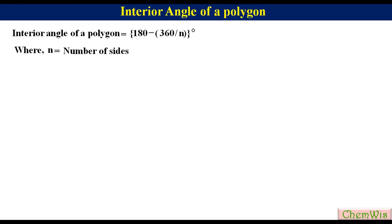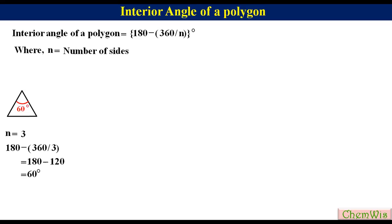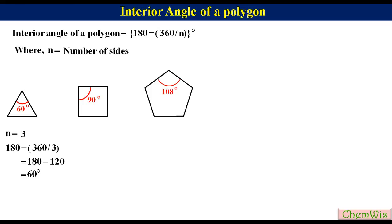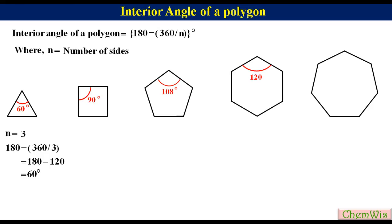For example, in an equilateral triangle, n is equal to 3. So the interior bond angle will be equal to 180 minus 360 upon 3, which is equal to 180 minus 120, equal to 60 degrees. Similarly, for a square the interior angle will be 90 degrees, for a pentagon 108 degrees, for a hexagon 120 degrees, and for a heptagon it will be 128.6 degrees.